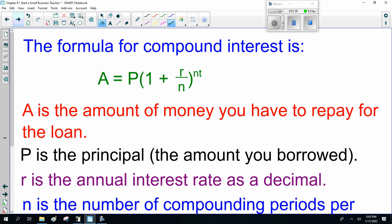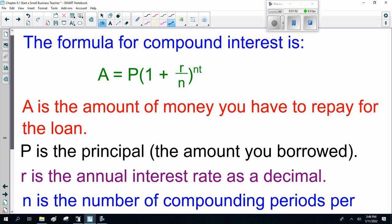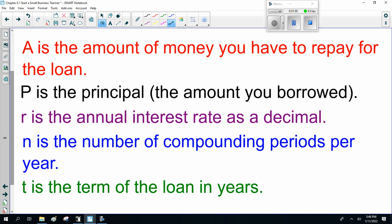The formula for compound interest is A equals P times (1 plus r over n) to the power of nt. A is the amount of money you have to repay for the loan. P is the principal, the amount you borrowed. R is the annual interest rate as a decimal. N is the number of compounding periods per year. And T is the term of the loan in years.